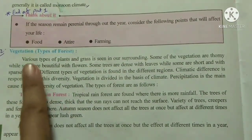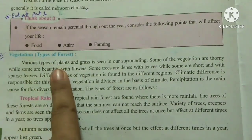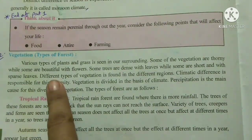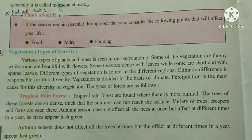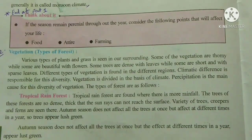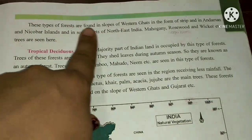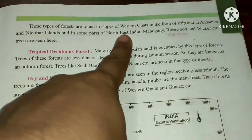This section tells us that vegetation refers to types of forests, not crops. The type of forest in India is decided according to climate and the amount of rainfall. The trees of tropical rainforests are dense with a large canopy so sun rays cannot reach the surface. The autumn season does not occur simultaneously but periodically throughout the year, which is why the trees in tropical rainforests are evergreen. These forests are found on the slopes of the Western Ghats, in Andaman-Nicobar Islands, and in parts of northeast India. Trees like mahogany, rosewood and wicker are seen here.